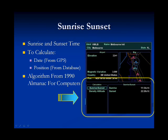This is the sunrise and sunset page which displays the sunrise and sunset for a selected airport. To get the sunrise and sunset, you need the date which is taken from the GPS and the position which is taken from the navigational database. An algorithm from the 1990 Almanac for Computers is used to get this information. This information is available for any position in the entire world as long as you have the current date and position. The sunrise and sunset is given in universal time coordinates but can be offset to give any time zone in the entire world.